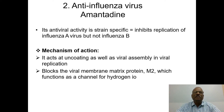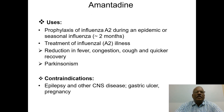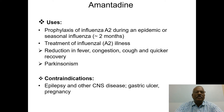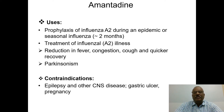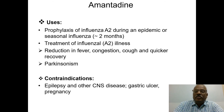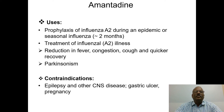The viral assembly and budding stage is inhibited by amantidine. Amantidine is used as a prophylactic drug for influenza A virus during an epidemic or seasonal influenza, and is also used for treatment of influenza illness — for fever reduction, congestion, cough, and quicker recovery. It is also an anti-Parkinsonism drug, but should not be given to epileptic patients or those with other central nervous system disorders.